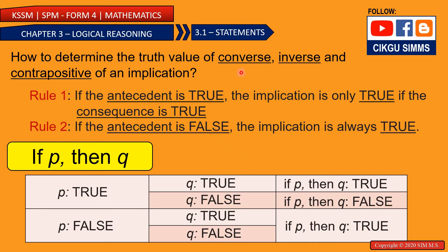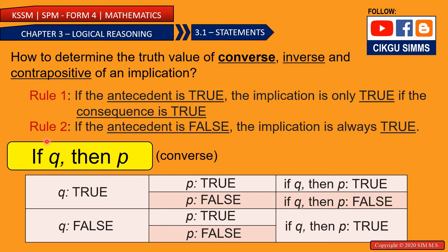Now let's look at converse, inverse, and contrapositive. For converse: if Q, then P. You don't need to be confused by this — just look at the antecedent, which is now Q. If Q is false, then this whole thing will be true. If Q is true, P needs to be true. If both are true, it will be true. If the consequence P is false, the whole thing will be false.